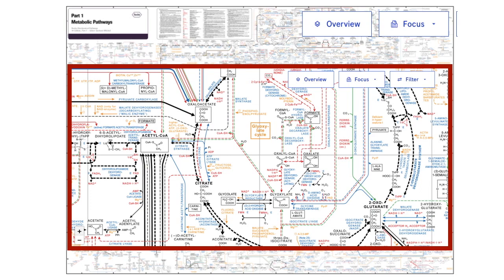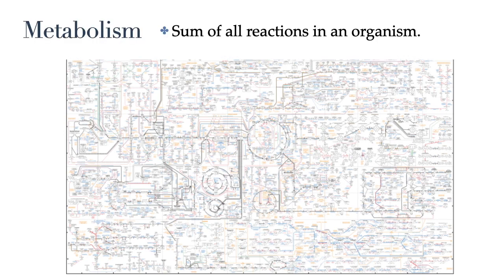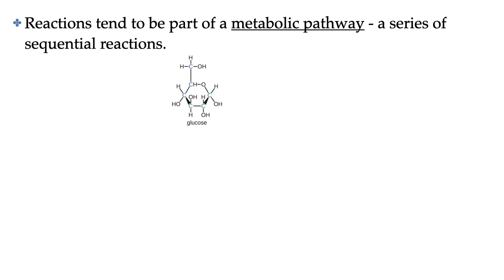In this course, we will be exploring a few of these metabolic pathways. But as you can see from this map, the chemistry in a cell can be quite complex. We call the sum of all chemical reactions in an organism the metabolism of that organism. Reactions in an organism tend to be part of a metabolic pathway.